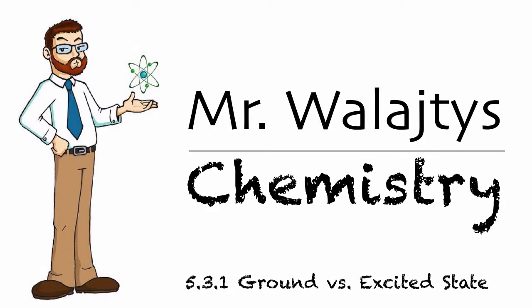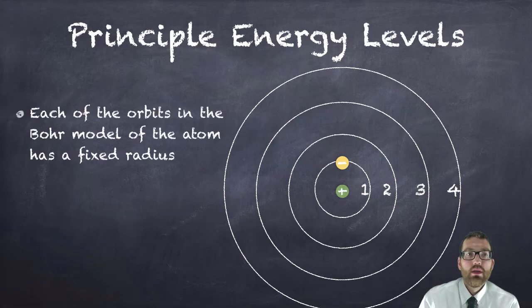In this video we're going to talk about ground state versus excited state electron configuration. Each of the orbits in the Bohr model of the atom has a fixed radius.